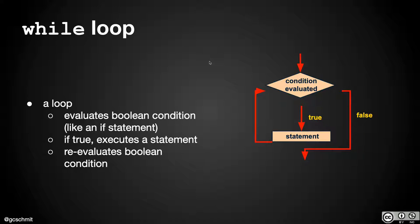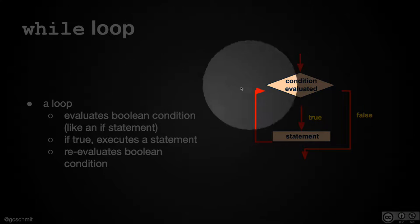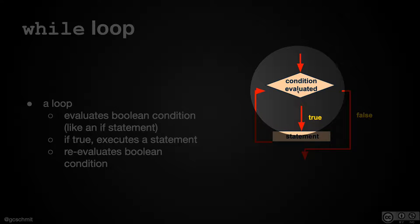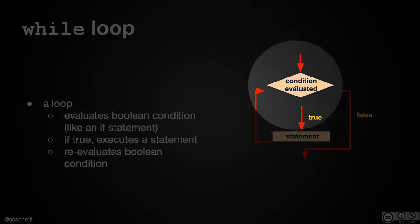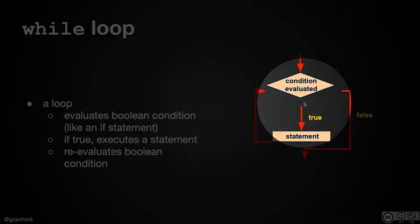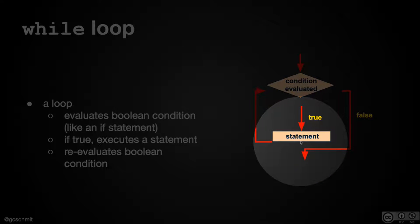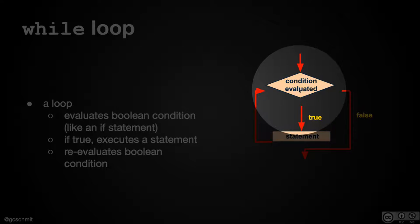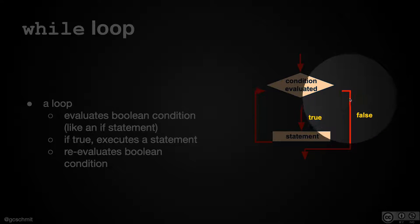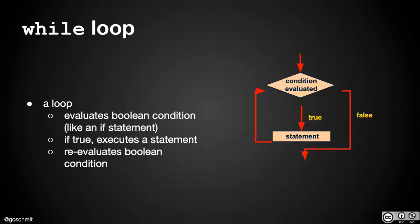A rectangle in our flowcharts represents some set of statements or operations that are performed. A while loop starts with some condition that we are evaluating, and if that condition evaluates to true, we execute the body of the loop. When we're done executing the statements, the flow of execution returns to that condition and evaluates it again. Eventually the condition will evaluate to false, in which case we skip the body and continue with whatever comes after the loop.